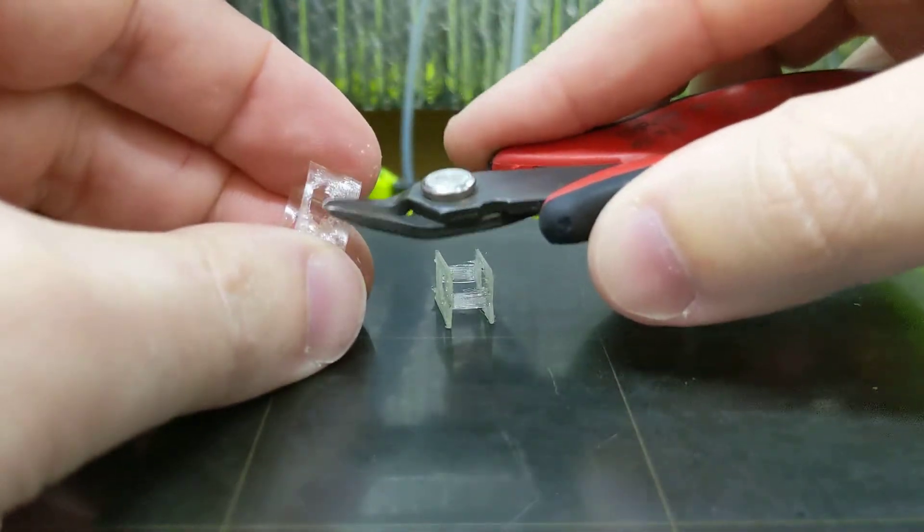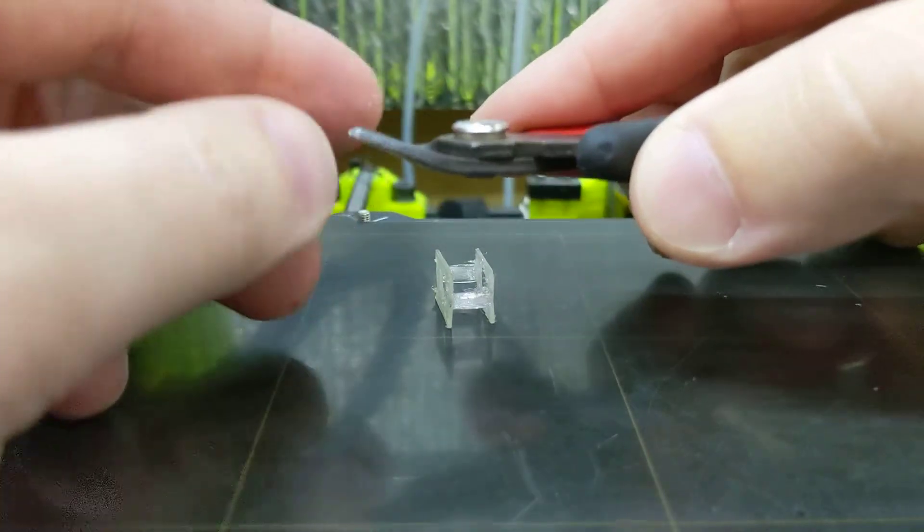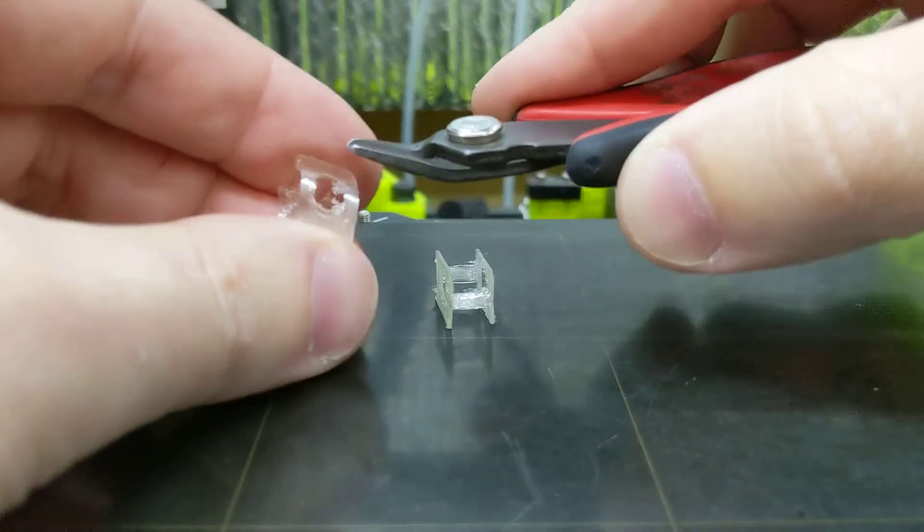Now there's two sides. This is the side with the bigger hole that goes under the key cap. And then there's the side that goes on the stem.